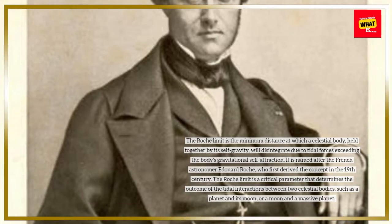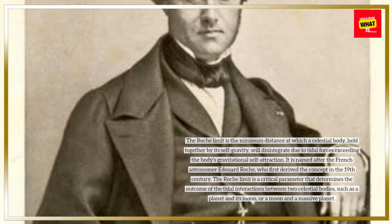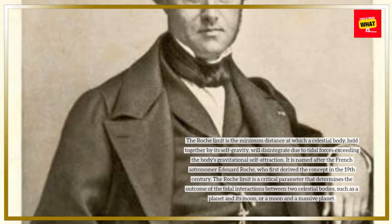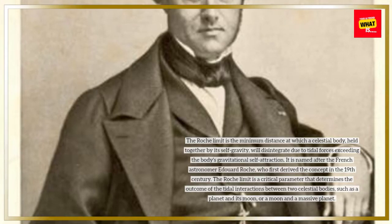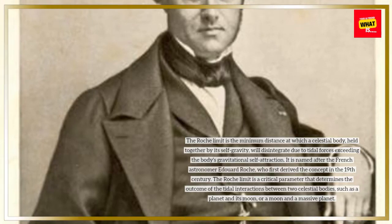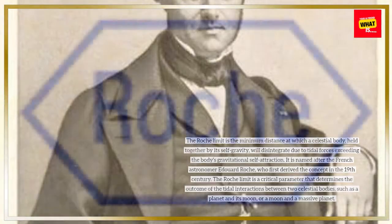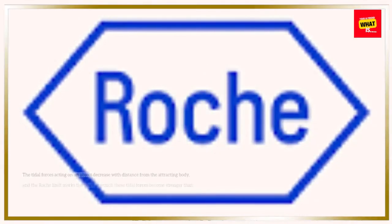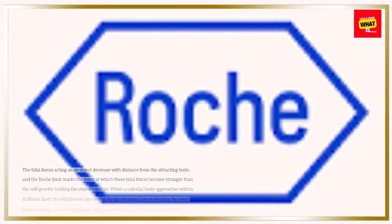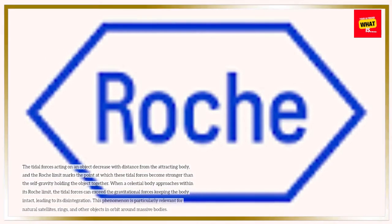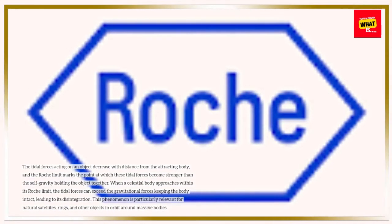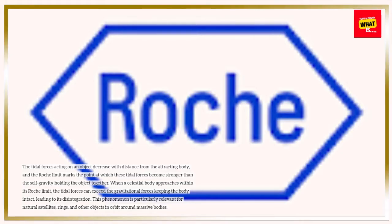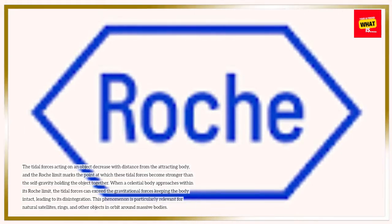The Roche limit is a critical parameter that determines the outcome of the tidal interactions between two celestial bodies, such as a planet and its moon, or a moon and a massive planet. The tidal forces acting on an object decrease with distance from the attracting body, and the Roche limit marks the point at which these tidal forces become stronger than the self-gravity holding the object together.